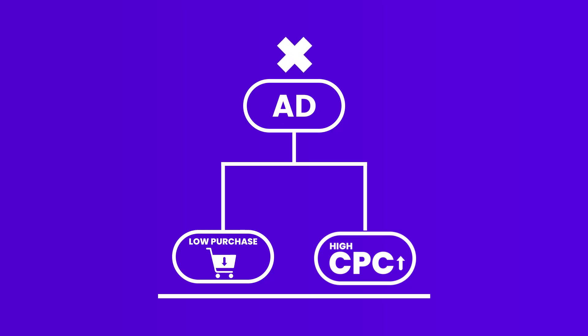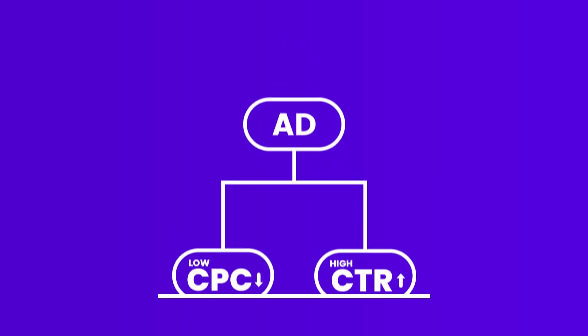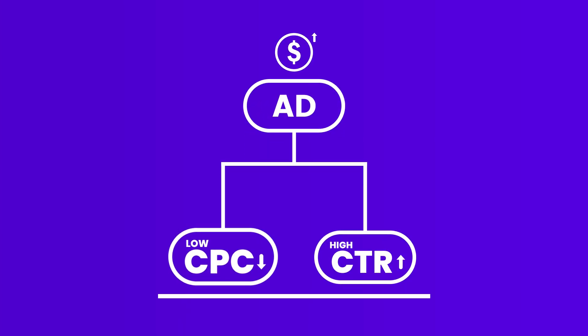As you get more data, do more tests — different creatives, different copy, different images, different interests, demographics, and locations. Just keep testing. Delete ads with low purchases and high CPC, and increase the budget on ads with low CPC and high click-through rates to scale your business.